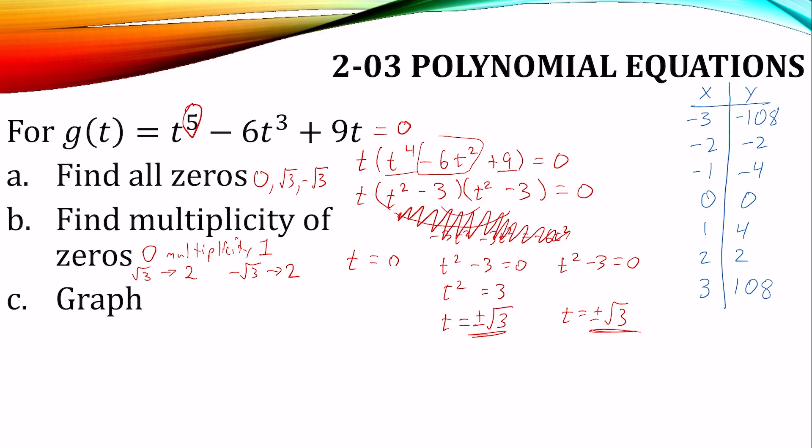But let's not forget our other zeros. We have √3. So when x is √3, which is about 1.6, we're at a zero. And when x is -√3, about -1.6, we're also at a zero. So we'll need that when we put it on our graph.